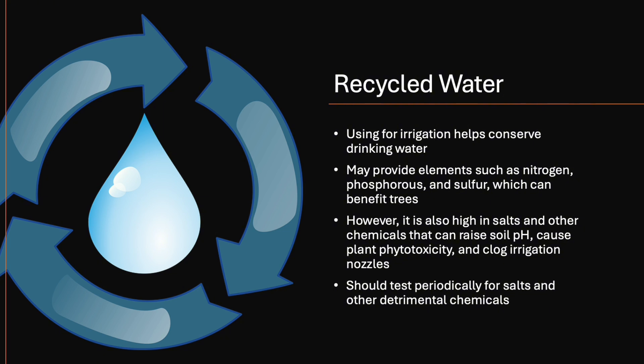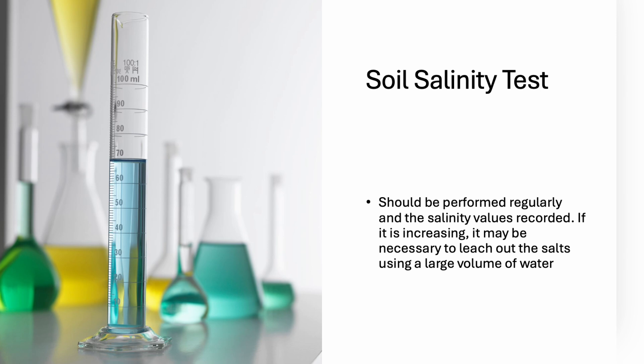Recycled water may provide elements such as nitrogen, phosphorus, and sulfur, which can benefit trees. However, it is also high in salts and other chemicals, can raise soil pH, cause plant phytotoxicity, and clog irrigation nozzles. You want to test your water for salts and other detrimental chemicals. Soil salinity tests should be conducted regularly, especially if using water from detention ponds, which can have high levels of sodium and chloride salts. If salinity is increasing, it may be necessary to leach the salts out using a large volume of water.